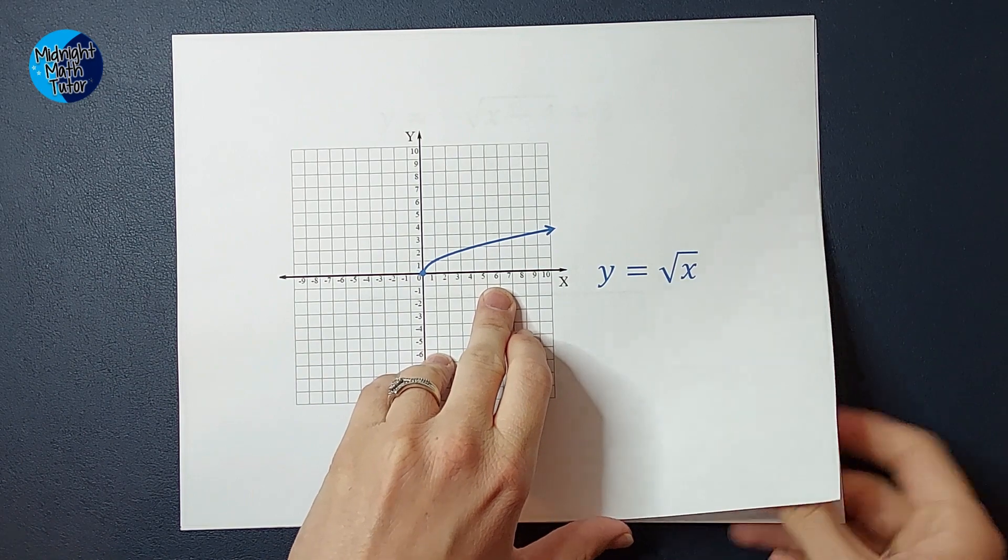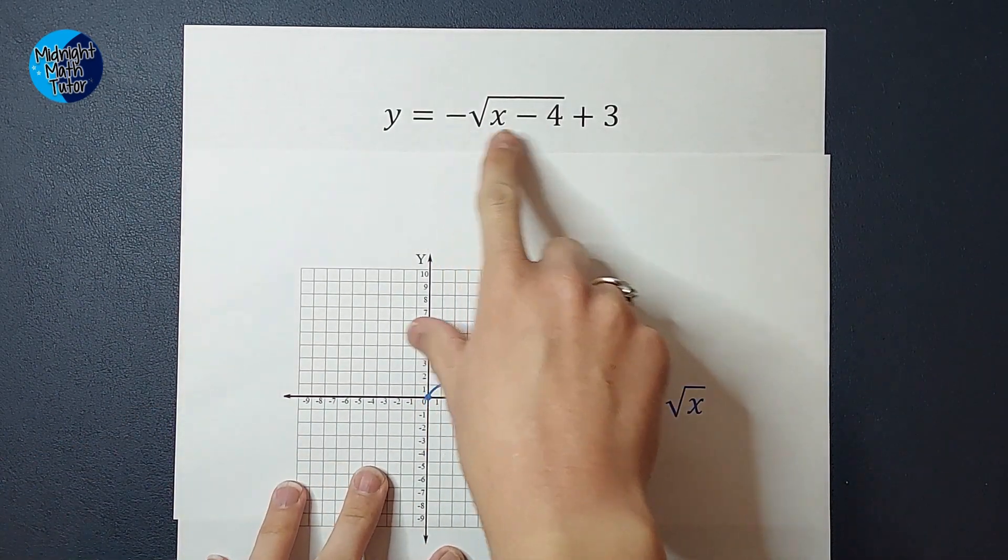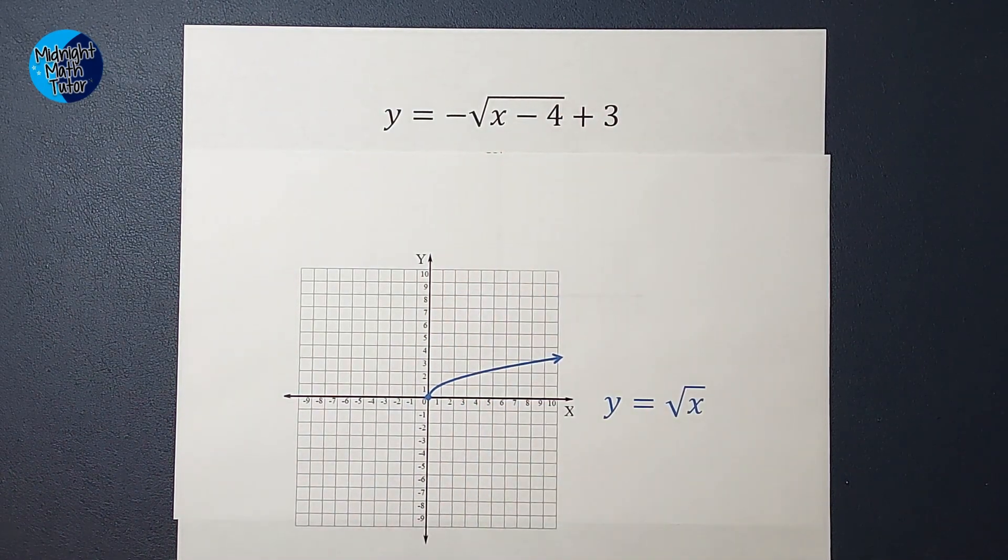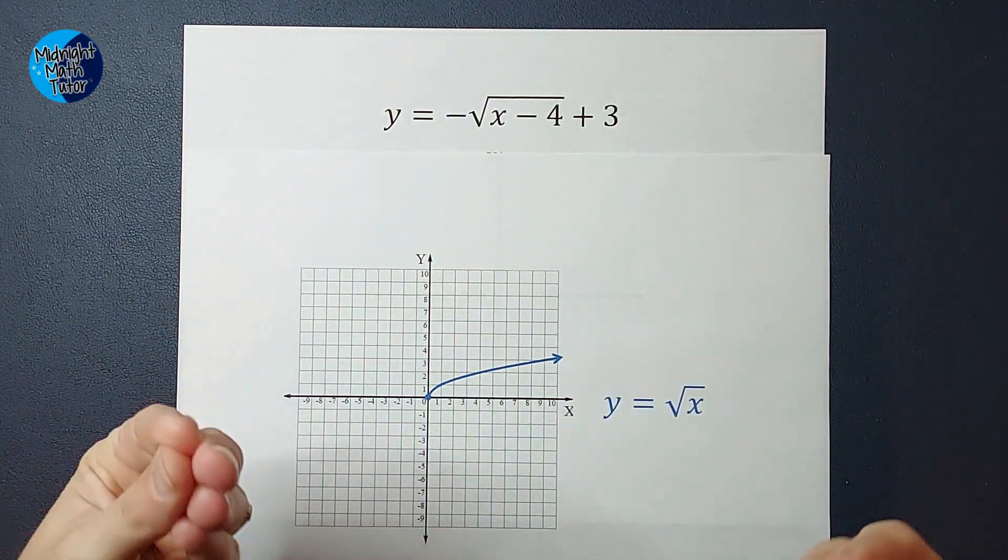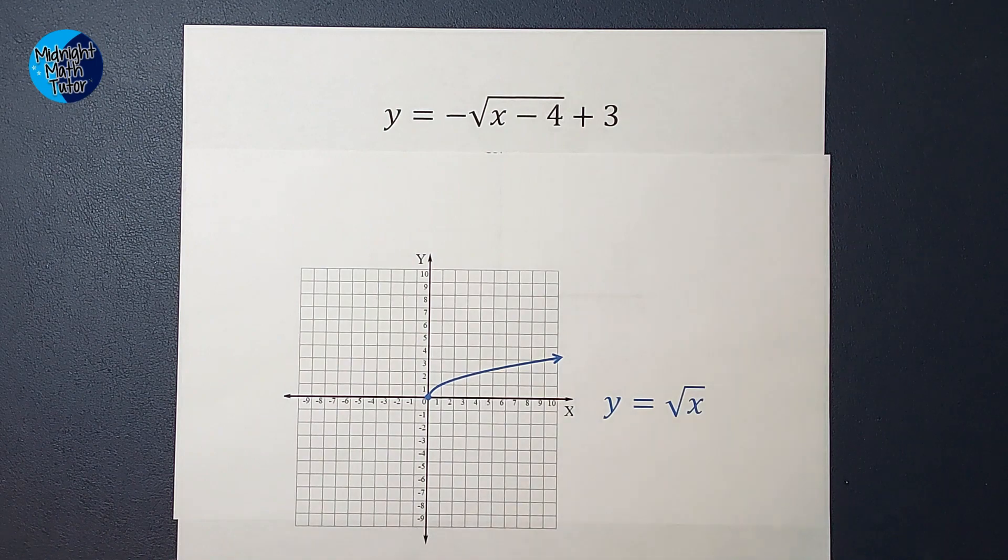Now, we have some other things happening to our graph. We're not just being asked to graph the square root of x. We've got a negative out front, we've got the minus 4 there, and the plus 3 there. So it's going to be the same graph, it's just going to be changed a little bit. Let me show you what I mean.